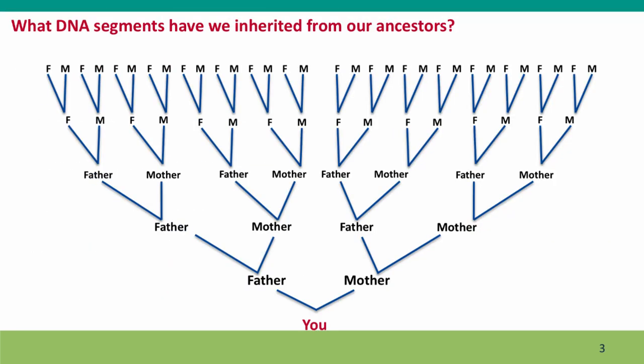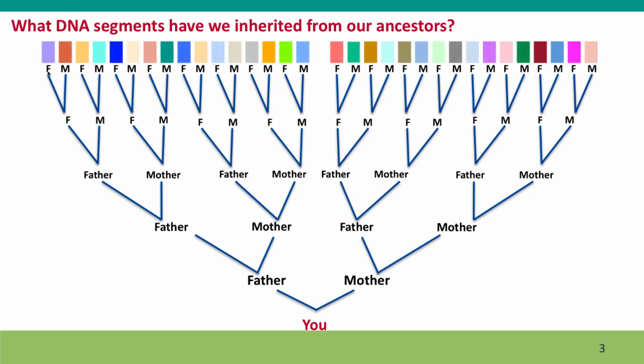Here's a family tree drawing — the same drawing from Module 6. Now that we understand more about how inheritance works, I want to use it to think about what happens to the DNA segments we inherit from our parents, grandparents, great-grandparents, and farther back. We've gone five generations back to our great-great-great-grandparents — 32 of them — and I've assigned each a different color so we can think about the segments of genome we might have inherited from each ancestor.